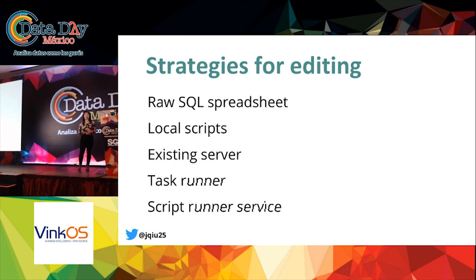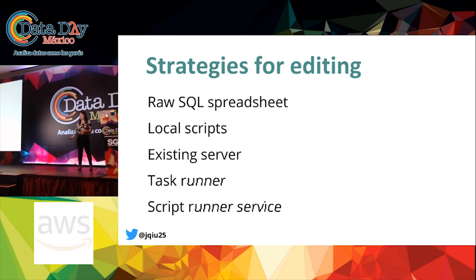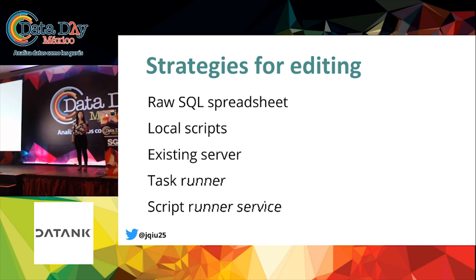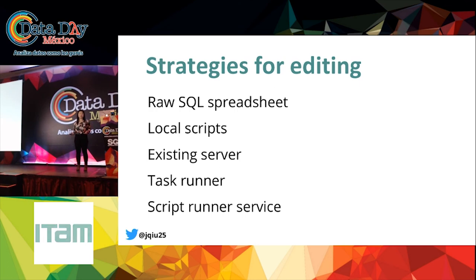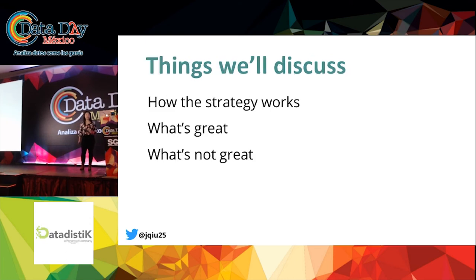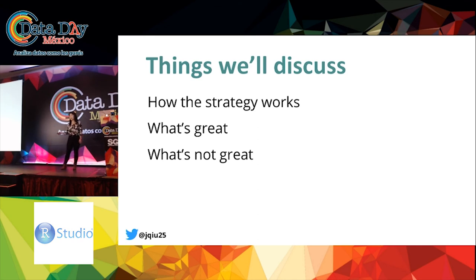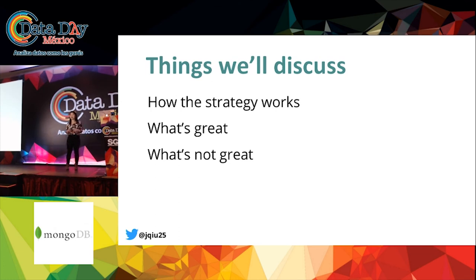Today we're going to talk through five strategies: maintaining a raw SQL spreadsheet, running scripts locally, running scripts on an existing server, using a task runner, and building out a script runner service. We'll walk through each in order of the amount of upfront investment necessary and the benefits you'll receive, and plot them so you can see how they compare. For each strategy we'll discuss how it works with an implementation example, what's great about it, and what's not so great. The examples will use a Python stack and a SQL database, but these strategies work with any stack of your choice.